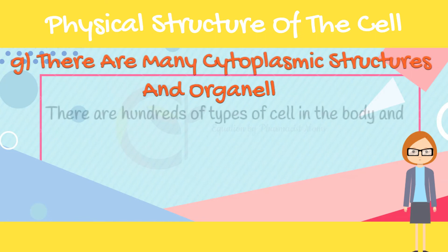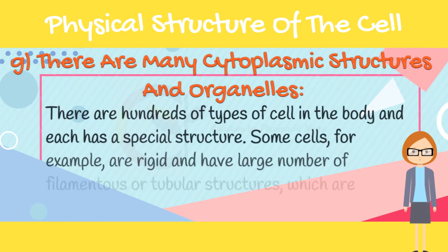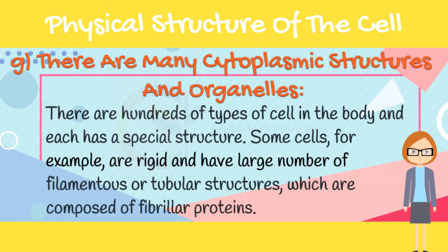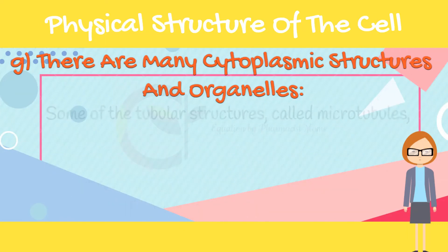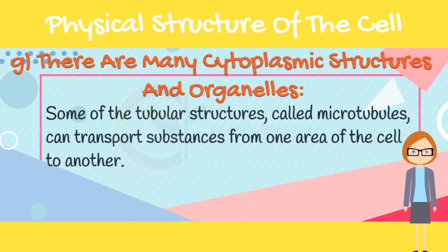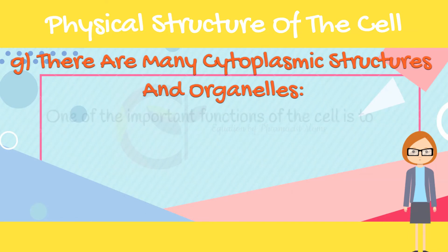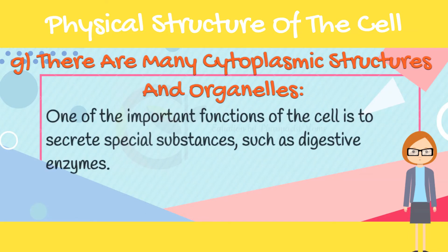There are many cytoplasmic structures and organelles. There are hundreds of types of cells in the body, and each has a special structure. Some cells are rigid and have large numbers of filamentous or tubular structures composed of fibrillar proteins. Some of the tubular structures, called microtubules, can transport substances from one area of the cell to another. One of the important functions of the cell is to secrete special substances such as digestive enzymes.